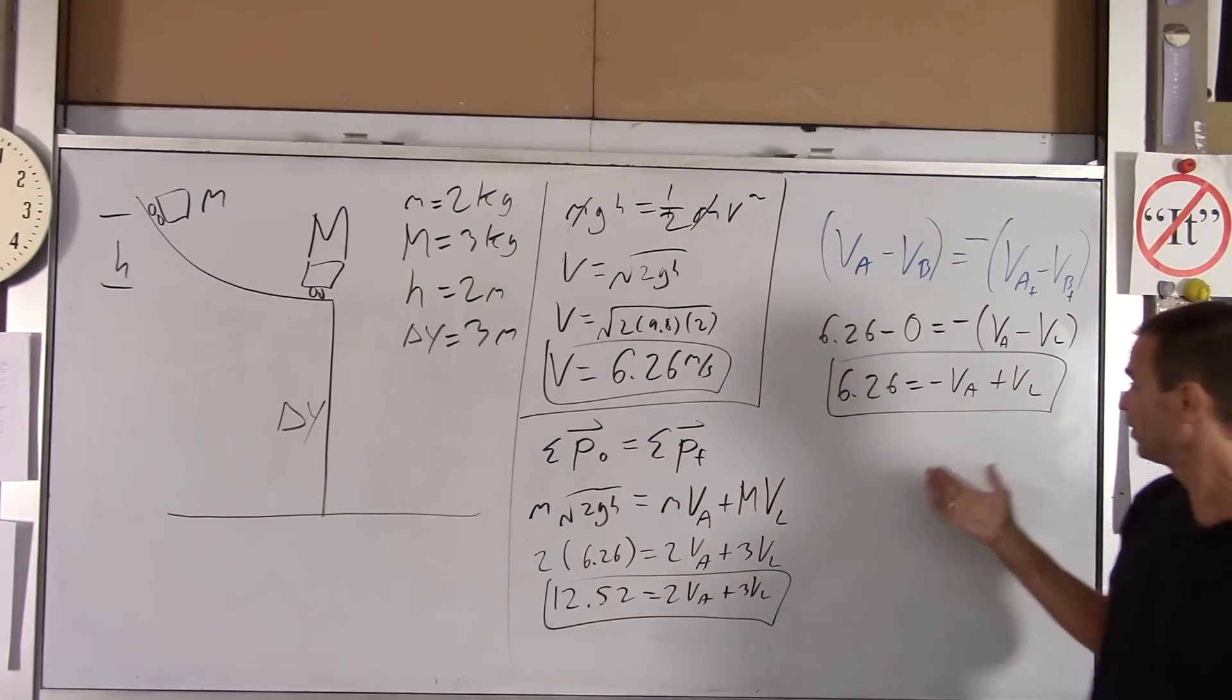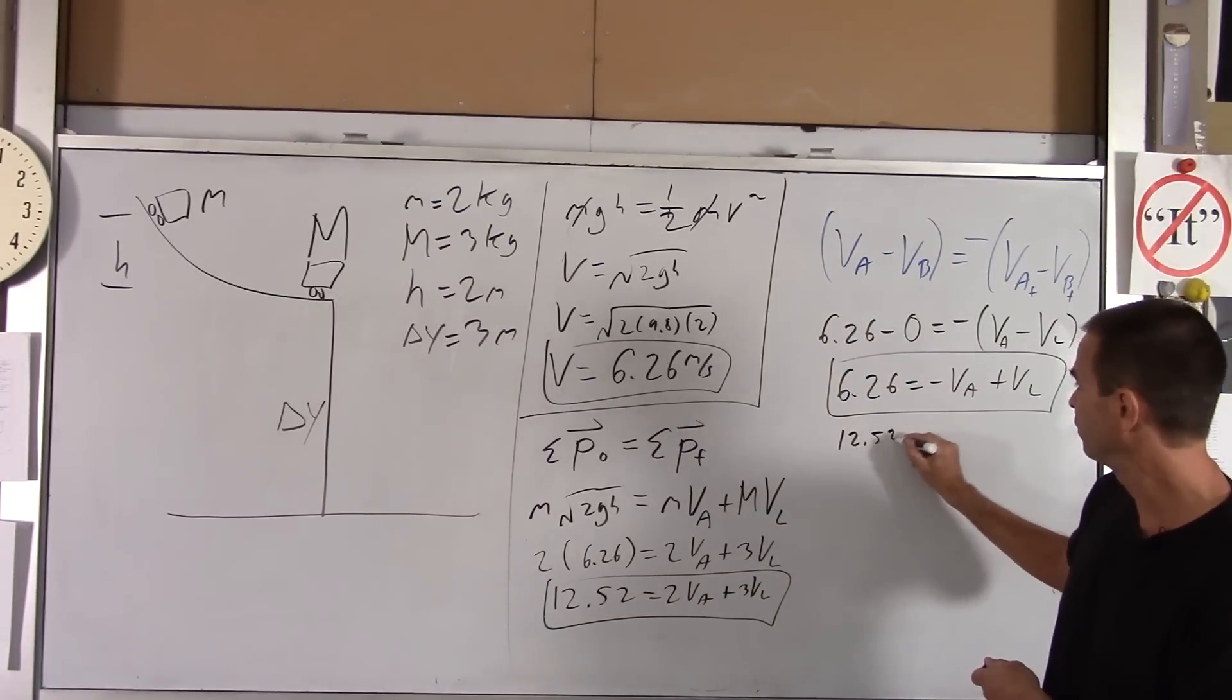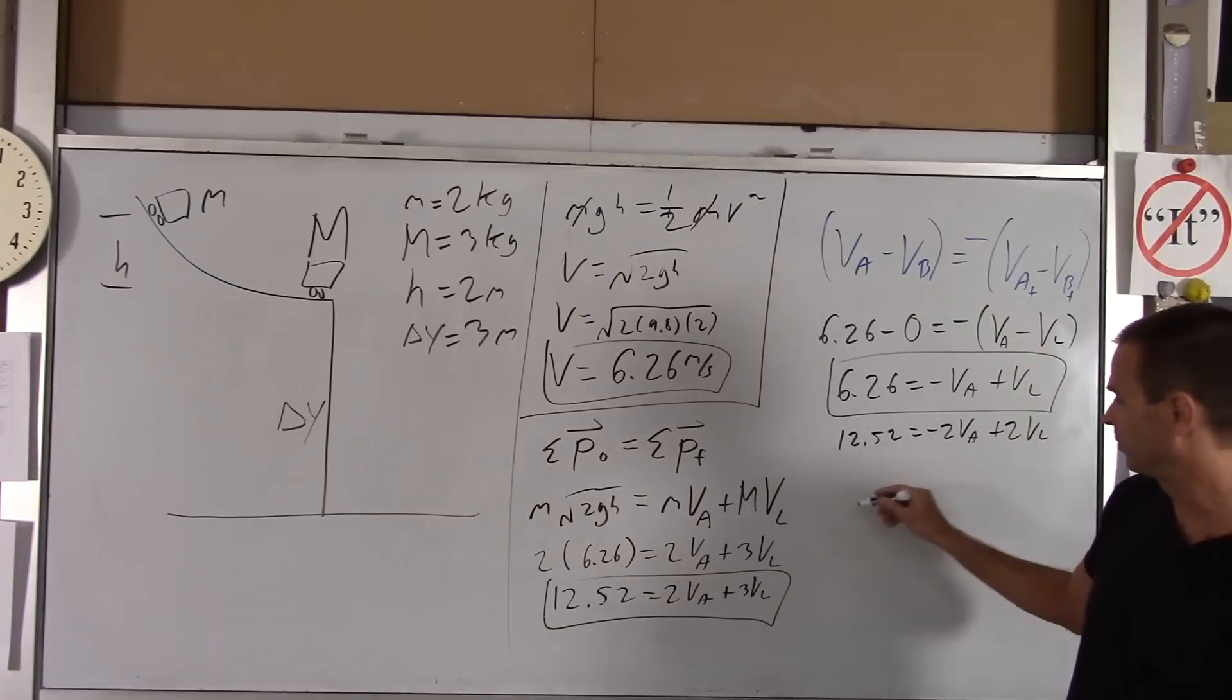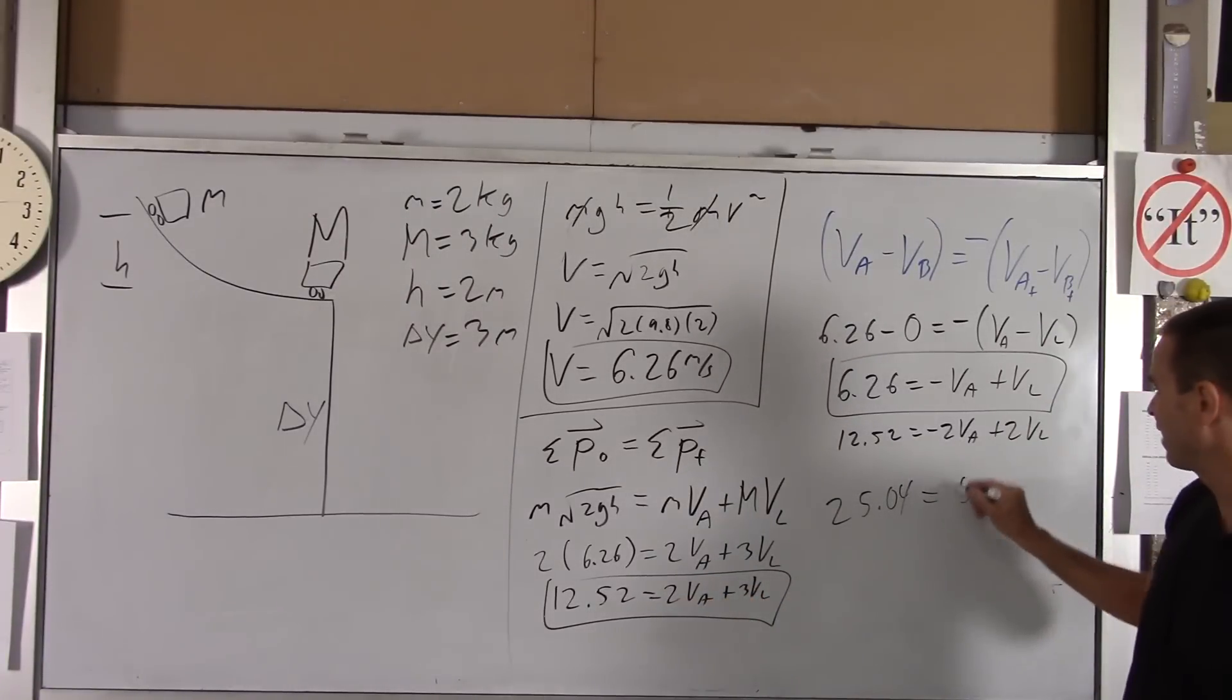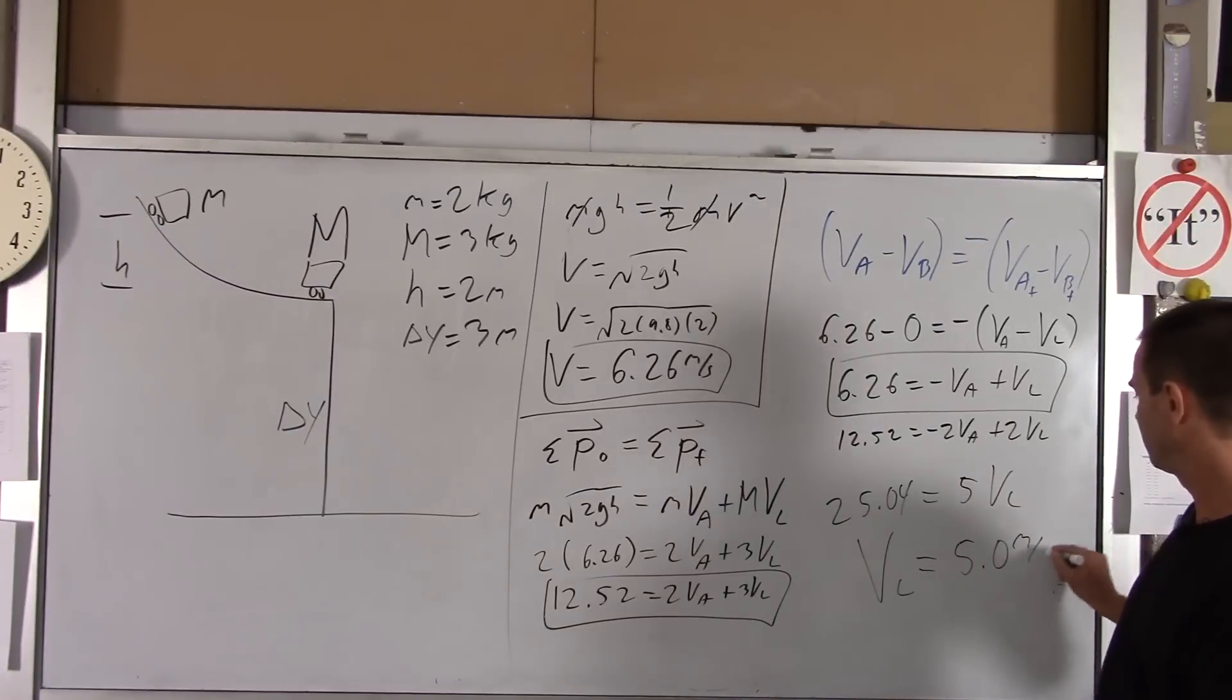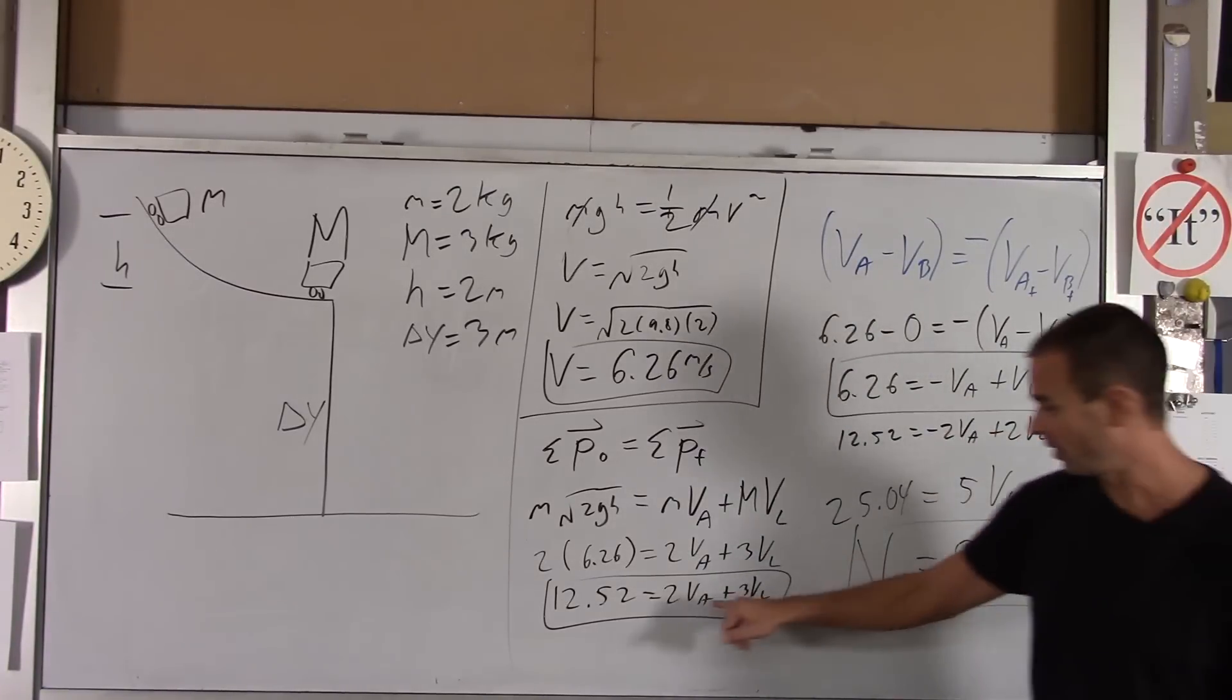There's a lot of ways you can solve this. I'm going to double this and then add it to this equation. So you get 12.52 equals negative 2 vA plus 2 vL. If you add that equation to this one, you get two times that, you get 25.04 equals your negative 2 vA and your positive 2 vA drop out and you get 5 vL. So now we know the launch velocity. I got basically 5.0 meters per second. Yeah, 25 divided by 5 roughly.